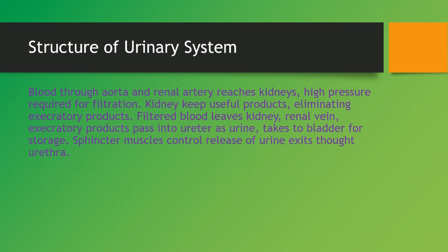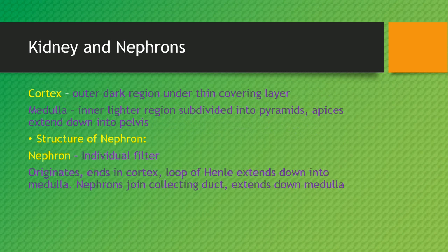Let's talk through the structure of the urinary system. Blood flows through the aorta from the heart, then goes to the renal artery and reaches the kidney. It needs to be at high pressure, which is required for filtration — we'll cover this when we talk about ultrafiltration. The kidney keeps its useful products and eliminates its excretory products. Filtered blood leaves the kidney via the renal vein, while excretory products pass into the ureter as urine, which is taken to the bladder for storage. Sphincter muscles control the release of urine as it exits through the urethra.